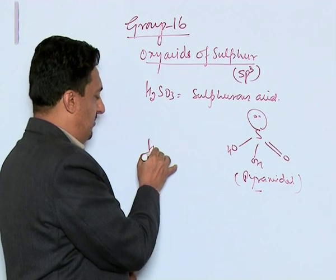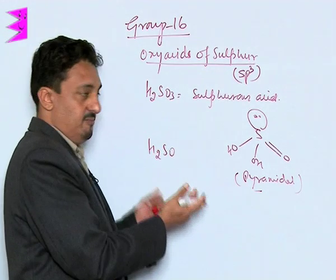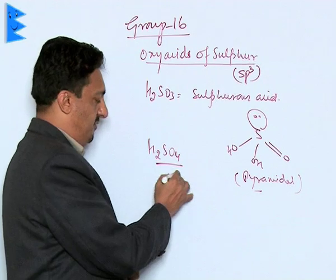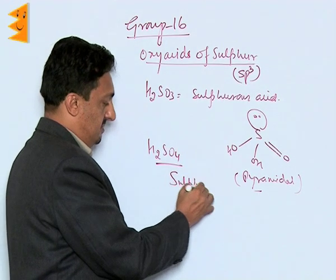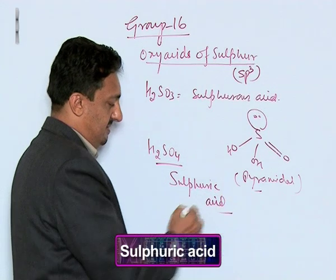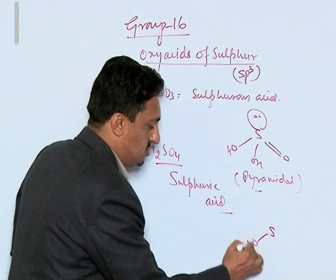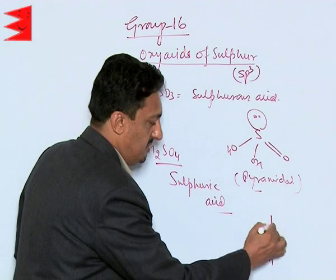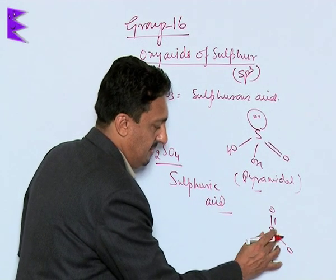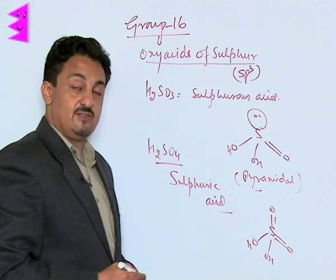The most important oxy acid of Sulphur is H2SO4, sulphuric acid. It has two OH groups and two oxygen atoms double-bonded to the central sulphur atom.